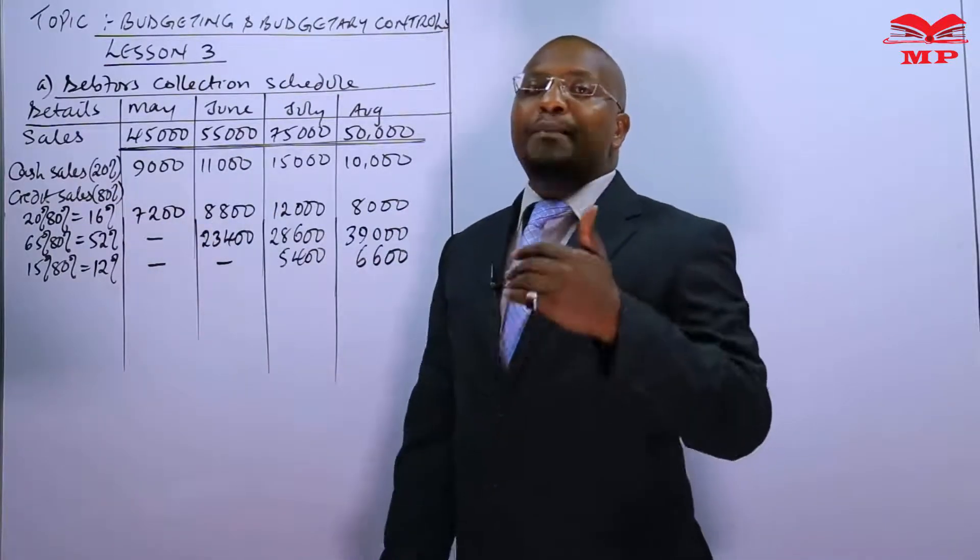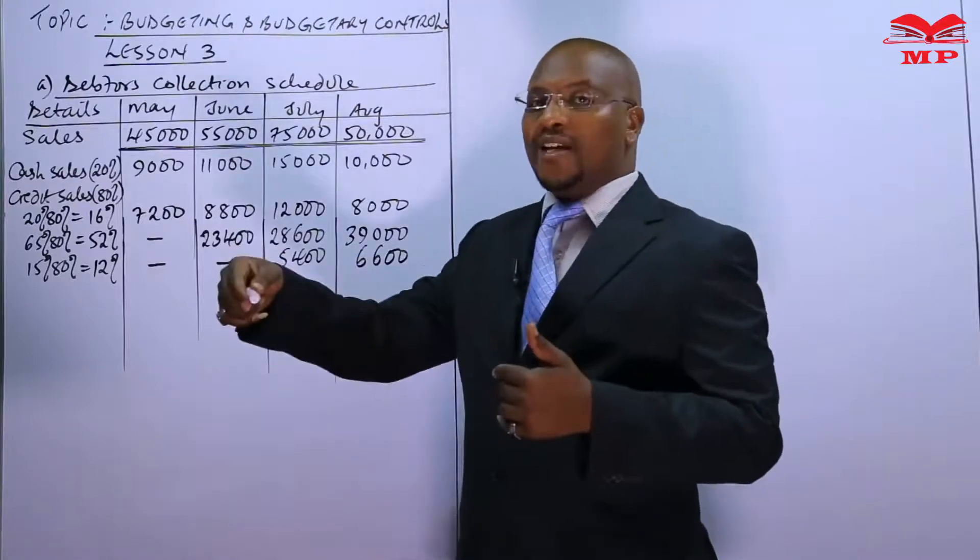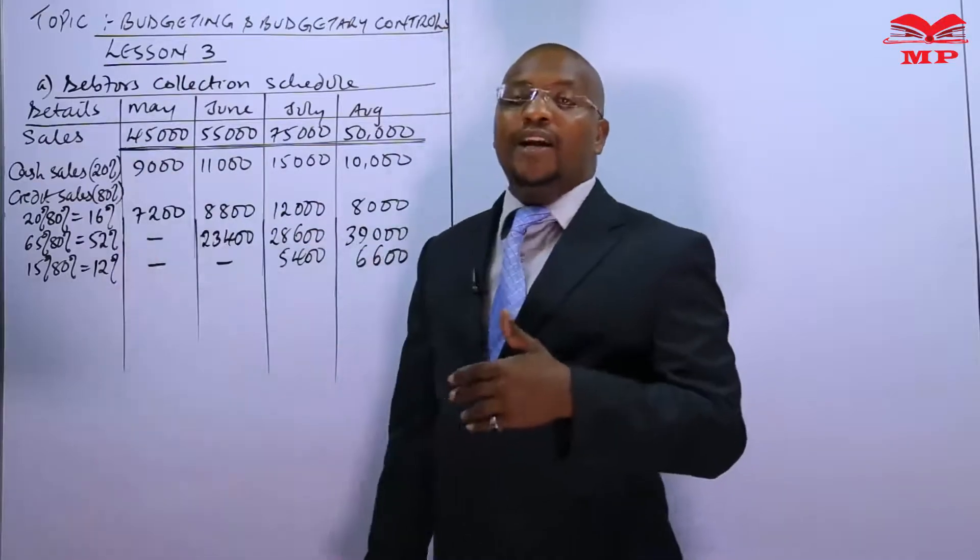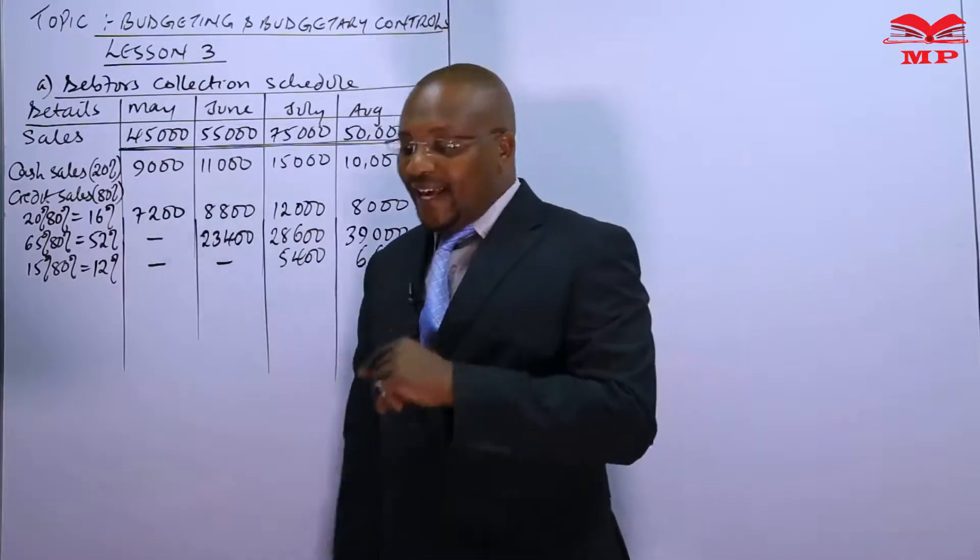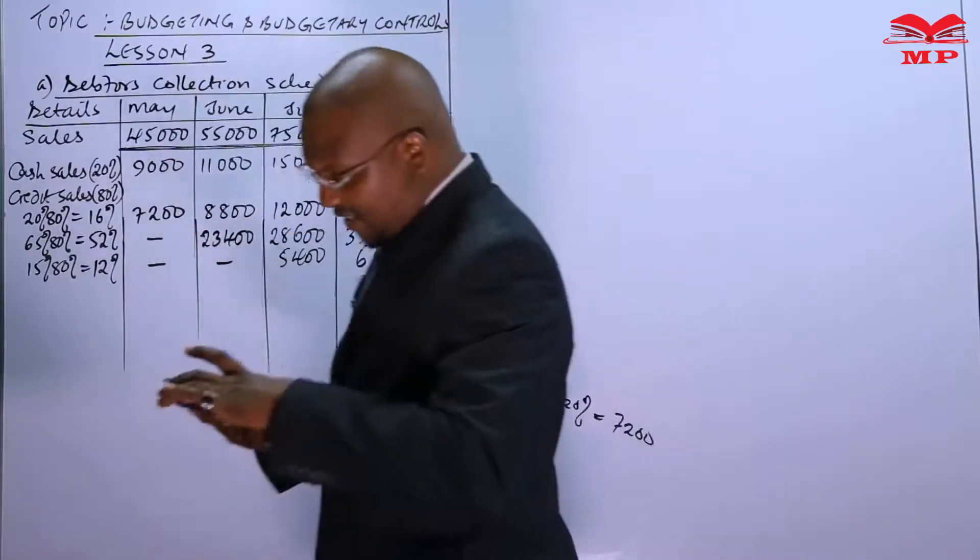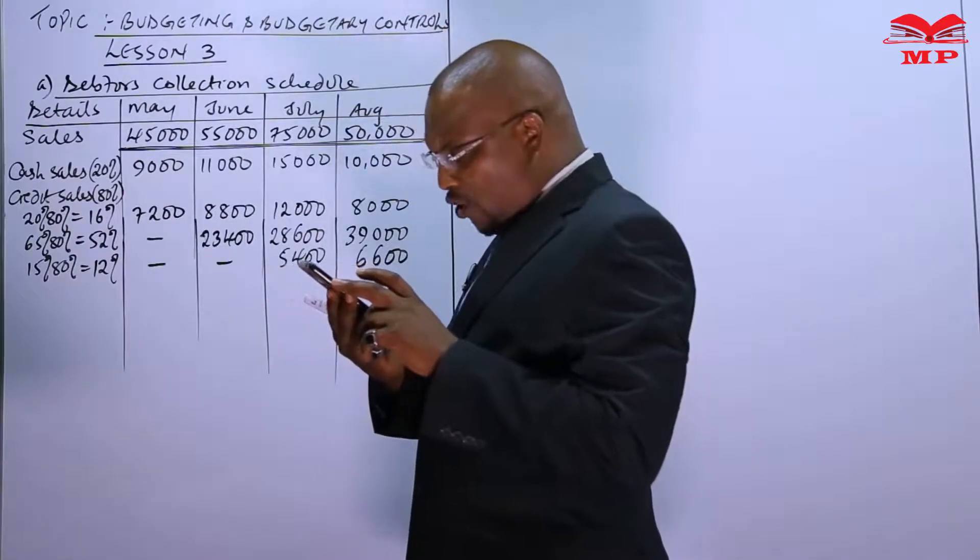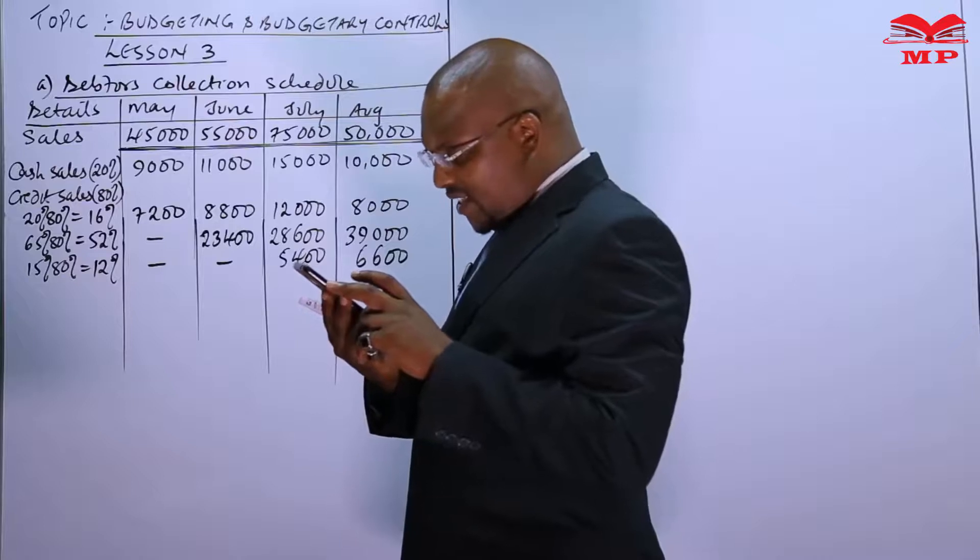Meaning there is a way that in this month of May and June we may be receiving the collection from sales made prior, which is the month of April, the month of March. And that's why we have been given the sales in this information, that sales for the month of March 2016 and April.